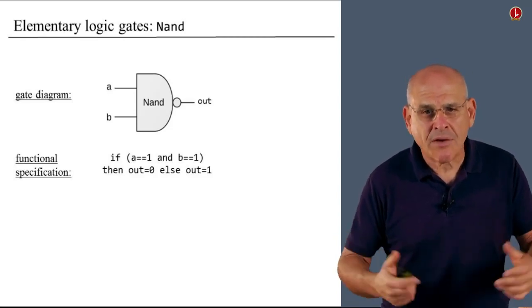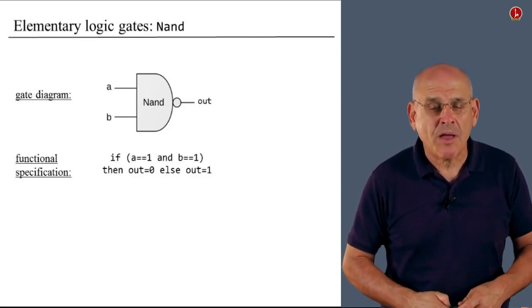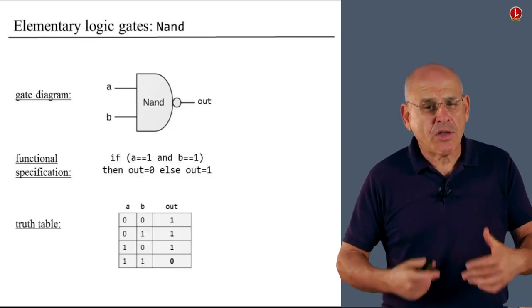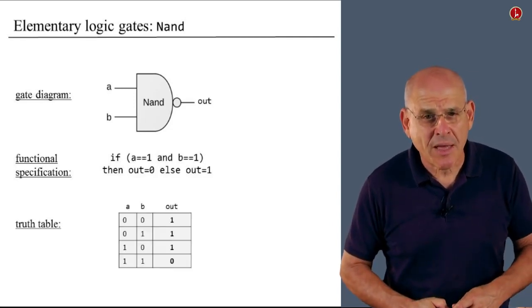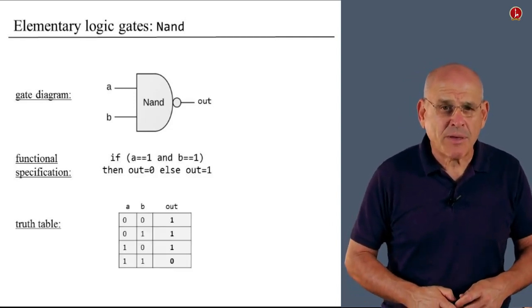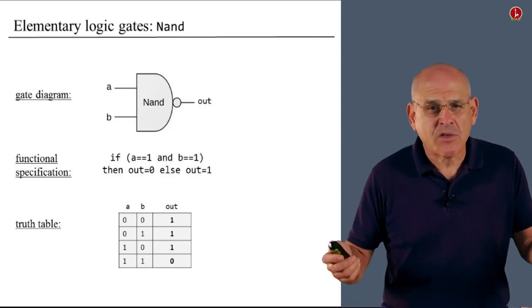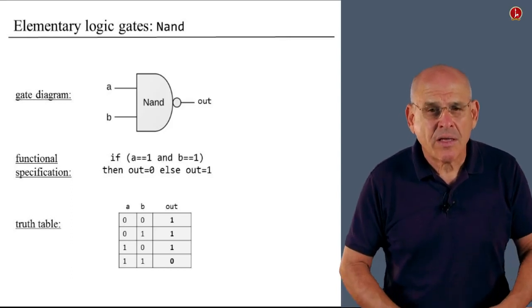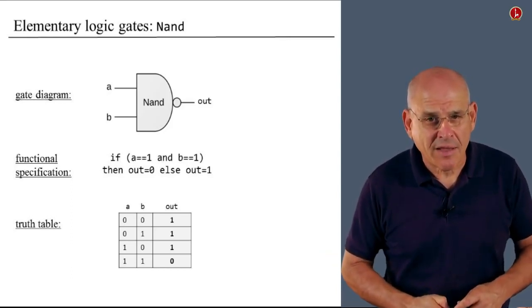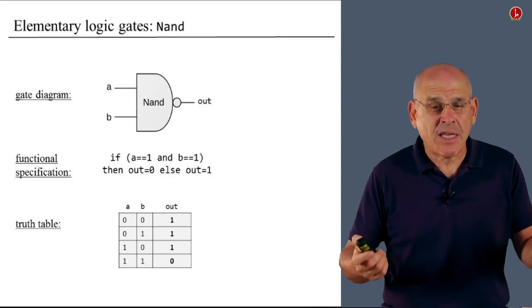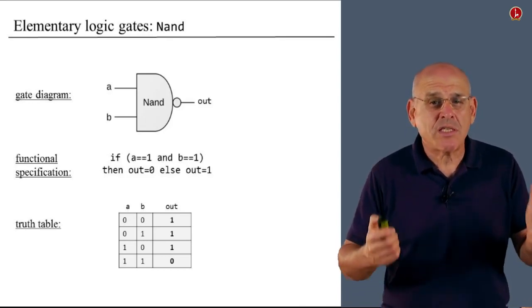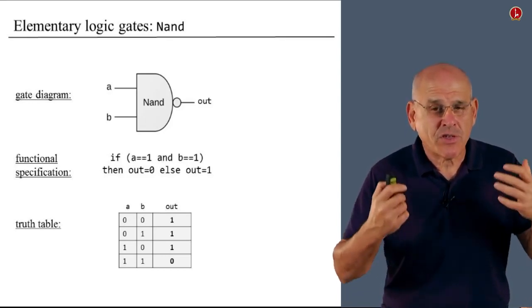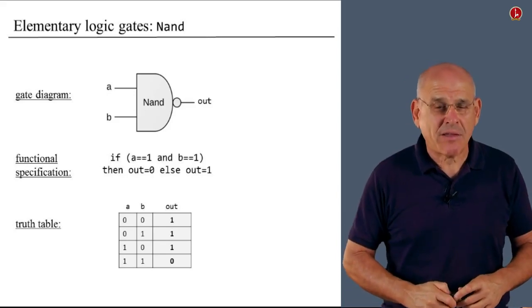Here is a functional description of this gate. If both inputs are 1, we output 0, under any other circumstance, we output 1. And here is also a truth table description of the same functional specification. Any one of these descriptions is fine. Taken together, what we have here is an abstraction of the NAND gate. We didn't say a word about how this thing is actually working. We just described what kind of functionality we can expect it to deliver.